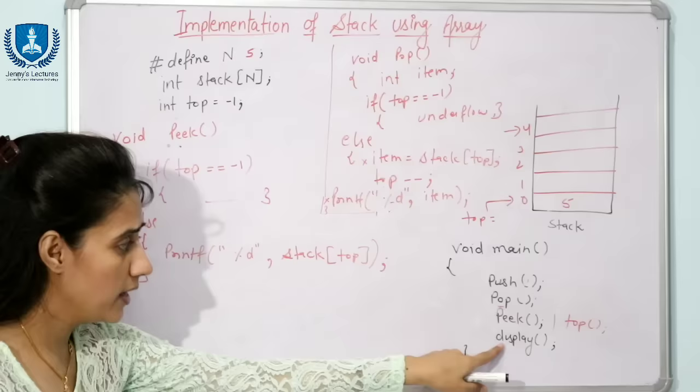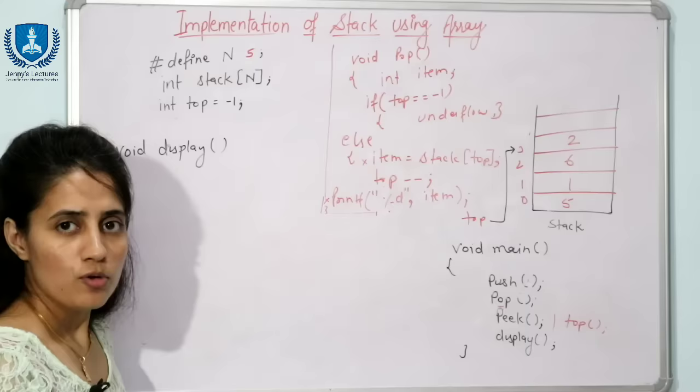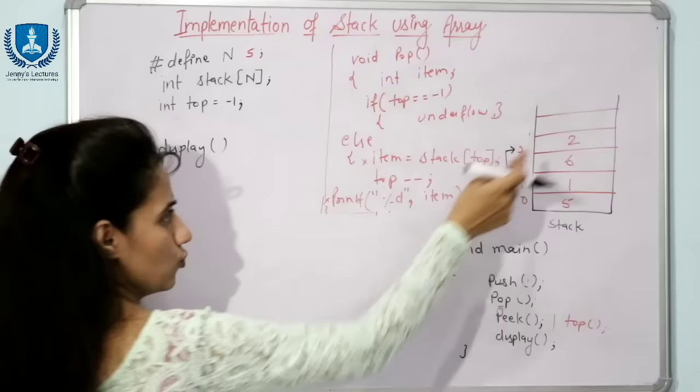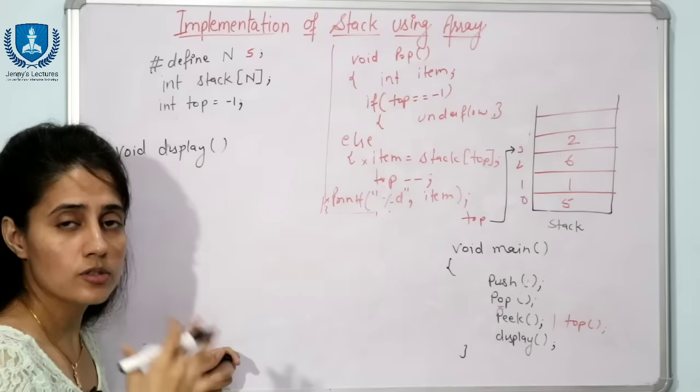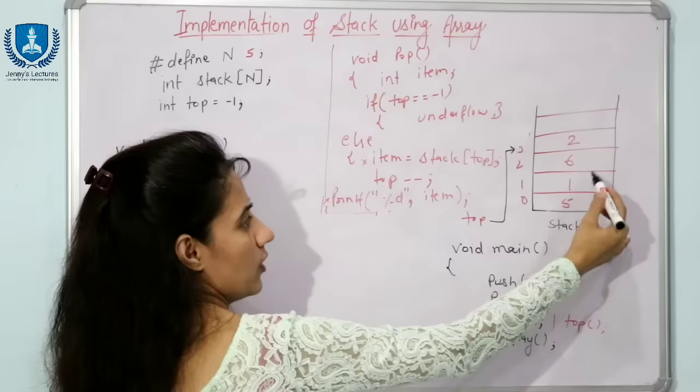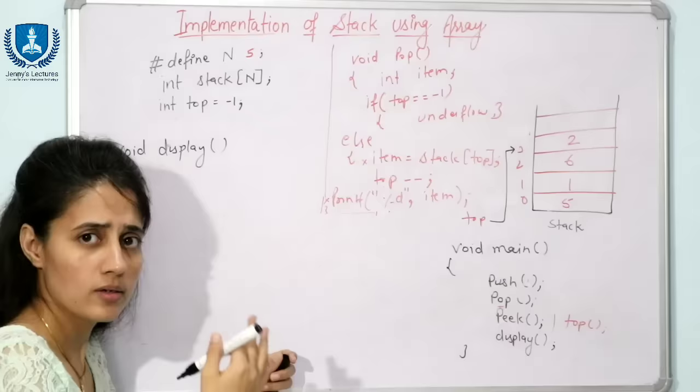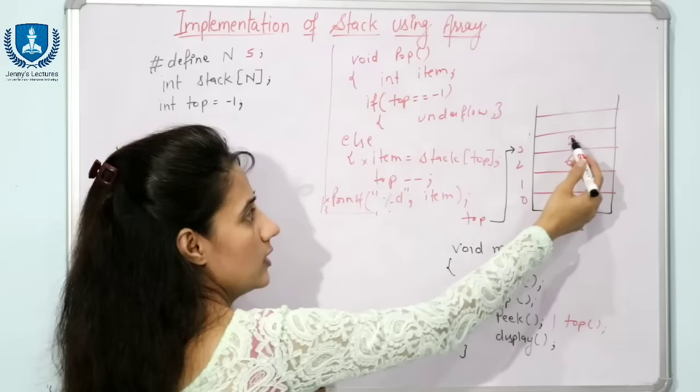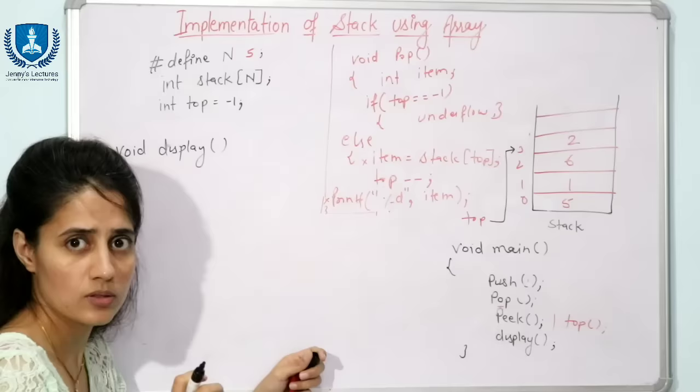Now we will display the content of the stack, also called traversing. Suppose we called push 4 times and the stack contains 5, 1, 6, 2. We will display from the top: 2 then 6 then 1 then 5 — we are not popping, just displaying. Some implementations display from bottom to top; here we display from top to bottom.